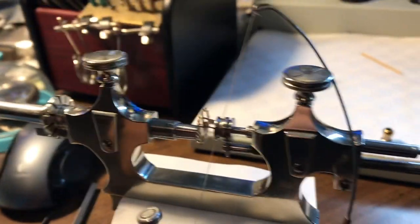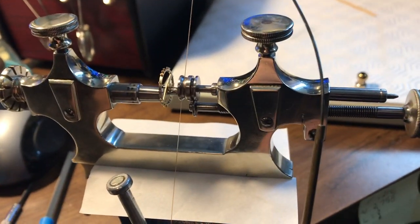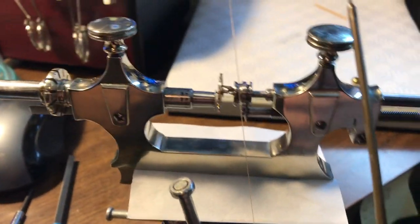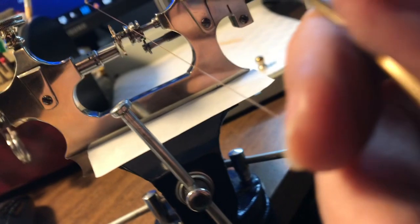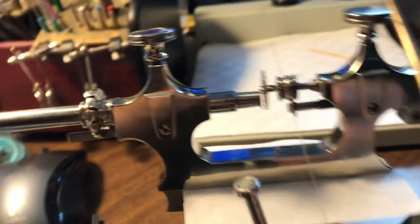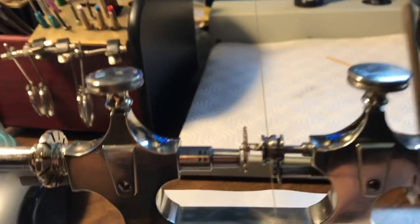This is a jacot tool that I've had in other videos. When you put the bow, this is the bow that's around the jacot tool held on one end and then wrapped around the other.